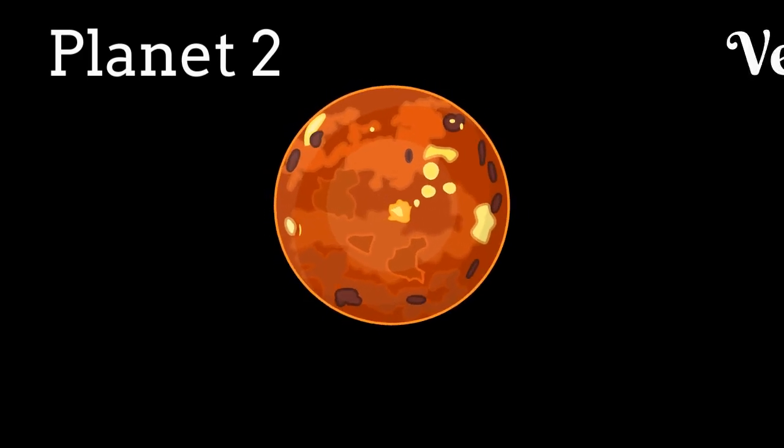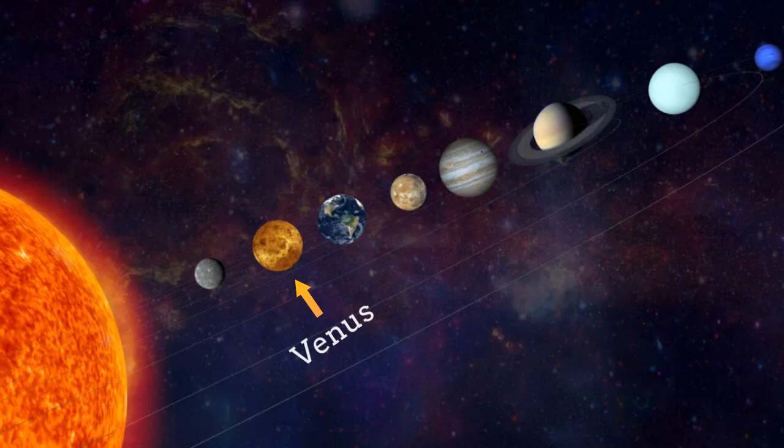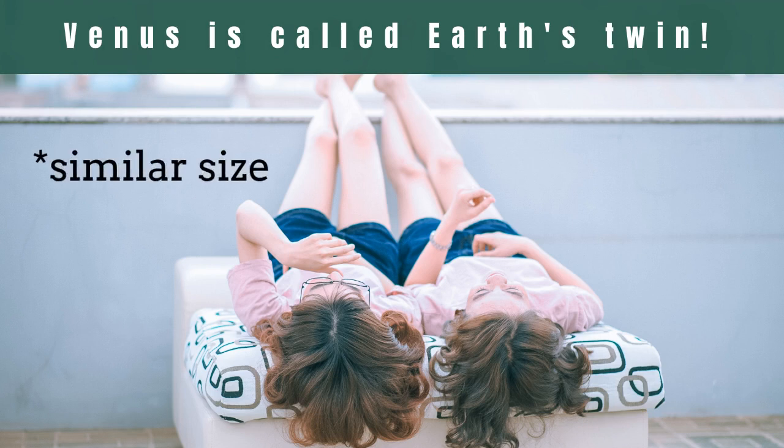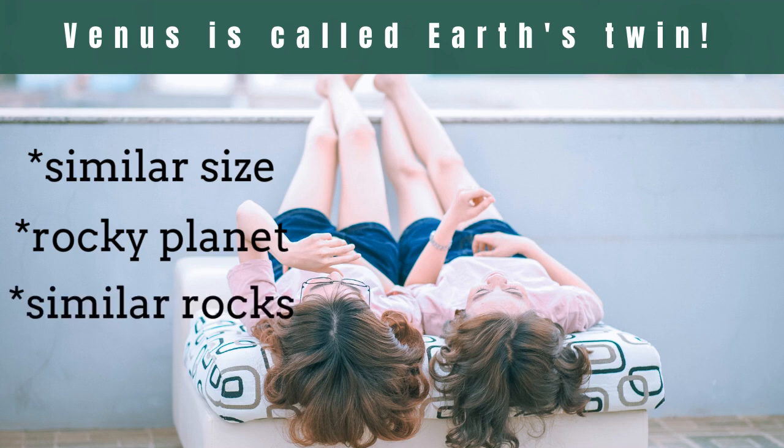The next planet, planet 2 is Venus. See, Venus is right here. It is the 2nd planet from the sun. Venus is called Earth's twin. And the reason is that they both are of very similar size. They both are rocky planets just like Mercury. Earth and Venus both are made up of similar rocks. So that's why they are known as twins.